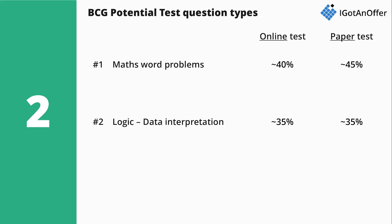The second type of questions in the BCG Potential Test are logic and data interpretation questions, where you'll be asked to assess different statements and determine which is true or false based on data in graphs and tables. They account for about 35% of questions in both the online and paper tests.